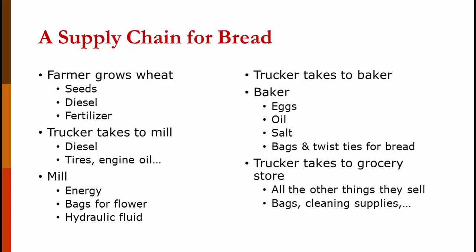A trucker then takes the flour to a baker. The baker needs eggs, oil, salt, bags, and twist ties at minimum, plus possibly flavoring, nuts, or other ingredients for specialty breads. Another trucker takes the finished bread to the grocery store. The grocery store has to buy everything it sells — not just bread — plus cleaning supplies, sanitation supplies, and everything needed to run a grocery store. As you can see, the value chain for bread is fairly complex, and I've only talked about a small piece of it.